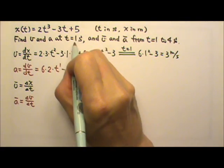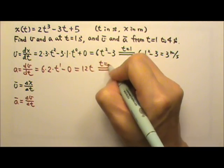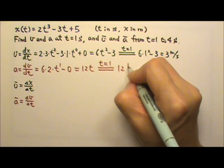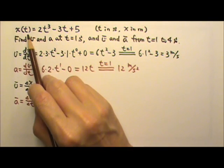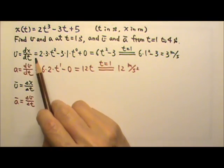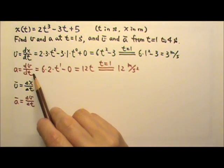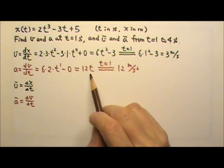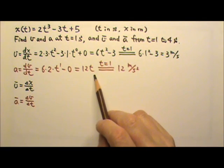To find the acceleration at 1 second, we plug in t equals 1, which gives us 12 meters per second squared. Because we lose one degree of power when taking the derivative of a polynomial: if position is a third-degree equation, velocity is a second-degree equation, and acceleration is a first-degree equation — third, second, first degree.